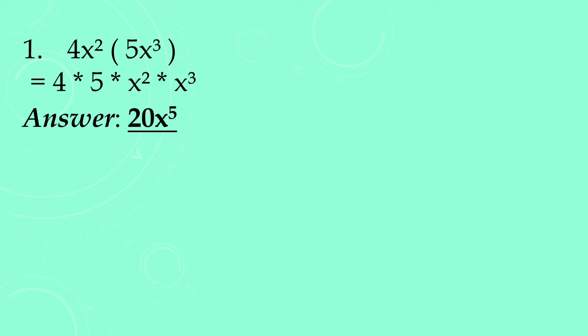Sa law of exponents, pagka magkapares po ng base, i-add lang po yung mga exponents. So ang exponent natin ay 2 tsaka 3, so i-add lang natin kaya naging 5. So ang ating answer ay 20x⁵.